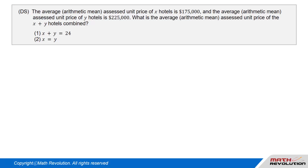Question 6, DS. The average or arithmetic mean assessed unit price of X hotels is $175,000, and the average or arithmetic mean assessed unit price of Y hotels is $225,000. What is the average or arithmetic mean assessed unit price of the X plus Y hotels combined?